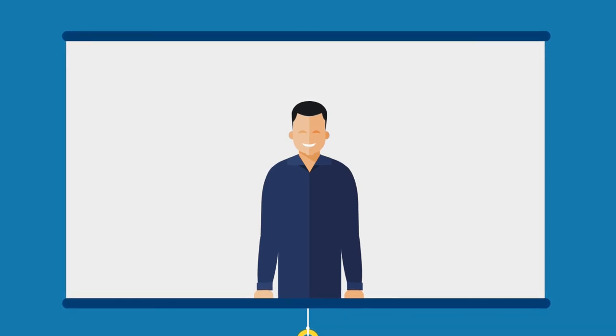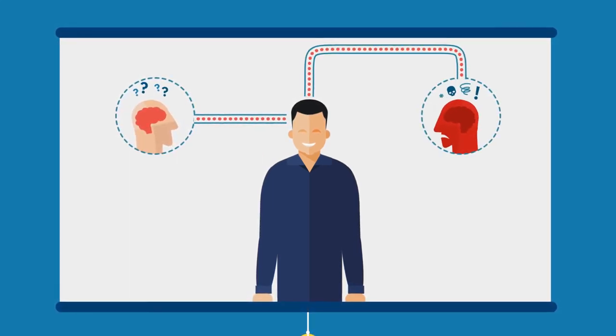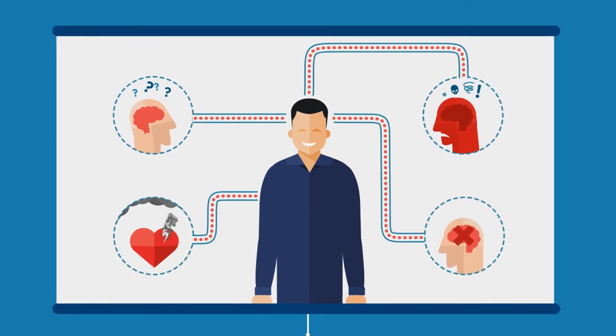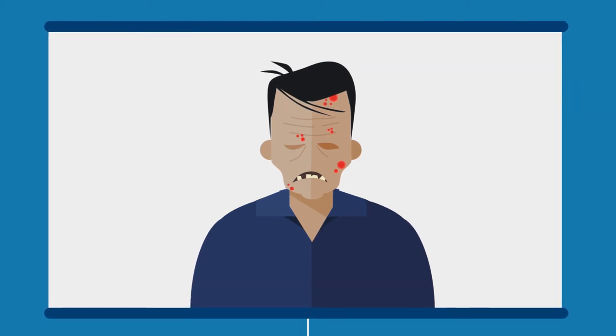Methamphetamine is a dangerous and potent illegal drug that can lead to memory loss, aggression, psychotic behavior and potential heart and brain damage, along with loss of weight and striking physical changes to the user's face, teeth and skin.